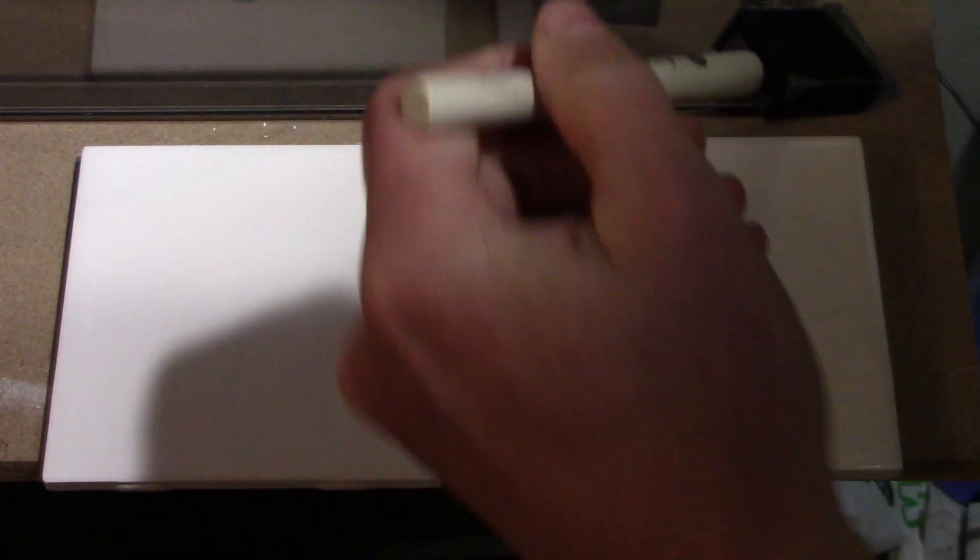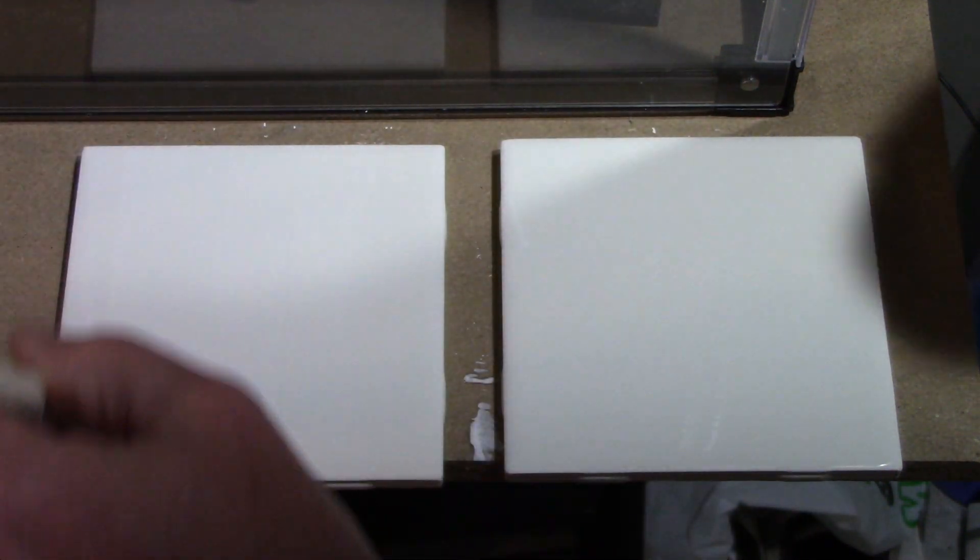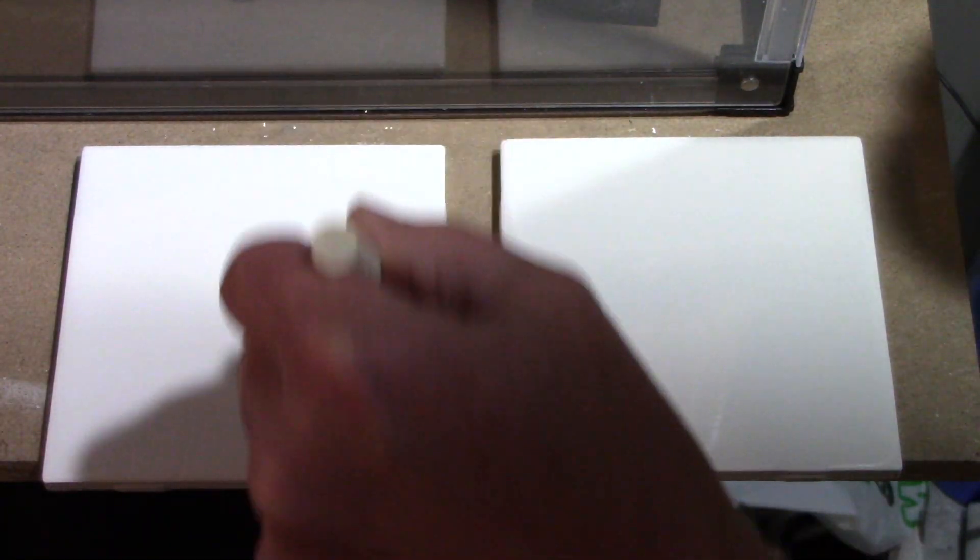As long as I'm playing around with thicknesses of paint, I'm going to try the metal etching compound on a tile. I'm just brushing some on now. I'll be curious to see how this works.